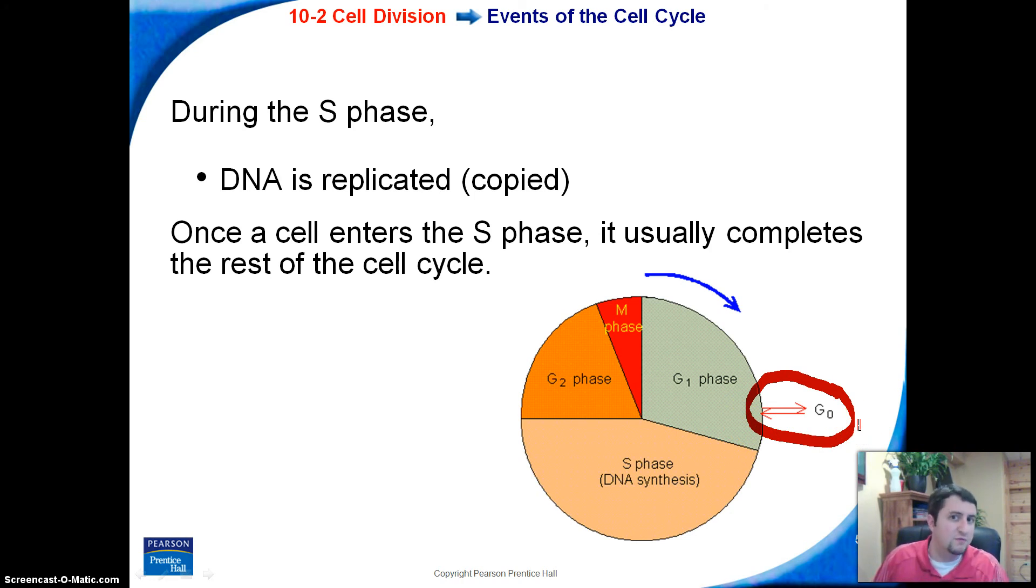Nerve cells will never divide in your entire lifespan, so they never go through this. Nerve cells never go through the S phase, they never go through the G2 phase, and they never go through the M phase. Nerve cells will simply just stay in G1 phase all of their life. So that's kind of interesting to think about. You are born with the same amount of nerve cells that you're going to die with.